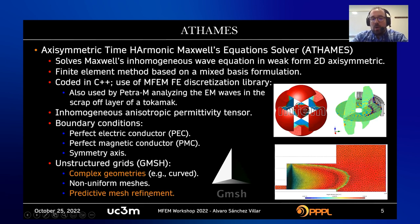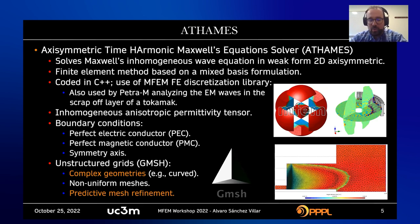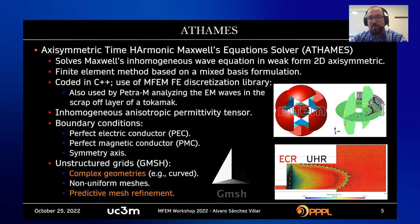Unstructured grids also provide means for predictive mesh refinement, so we can refine in locations where we need more resolution, since fields are collapsed in a very small volume. We have different bounding surfaces depending on the plasma parameters that define regions such as the ECR — the electron cyclotron resonance — and other types of resonance in this geometry like the upper hybrid resonance, which also play a role and need to be accounted for.